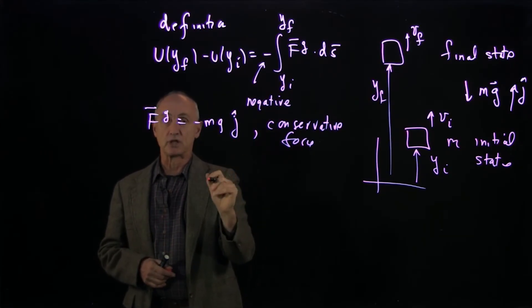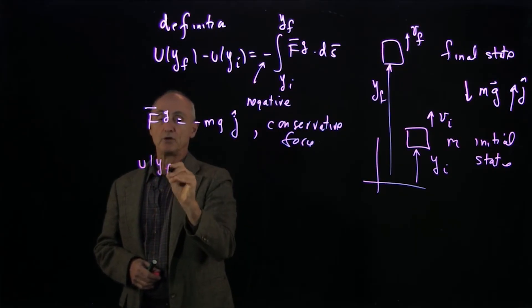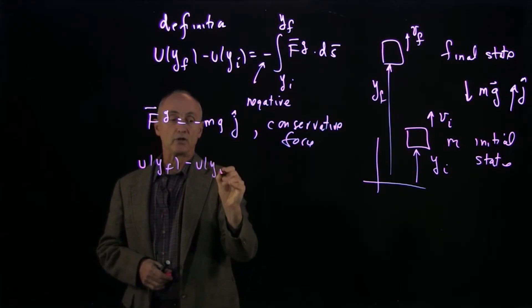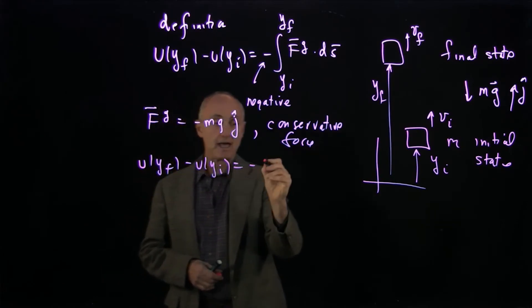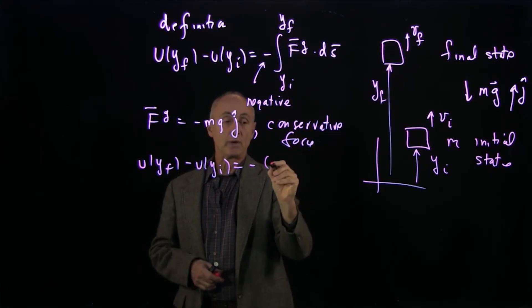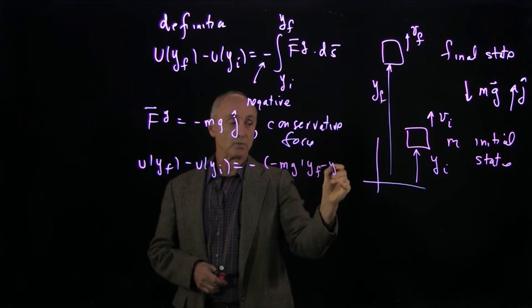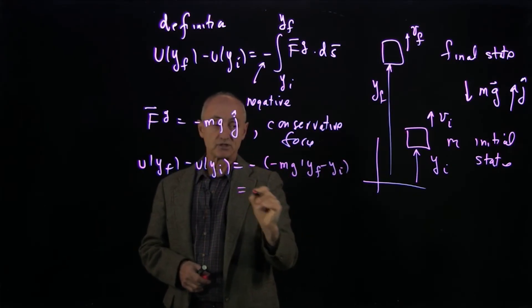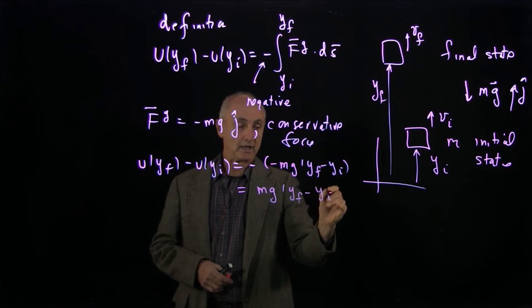But first, let's just remind ourselves of the calculation. And when we did this calculation before, we have U final minus U initial equals a negative sign in the definition. And when we calculated the work done by the conservative force, we had negative mg y final minus y initial. Notice the two minus signs. So we get mg y final minus y initial.